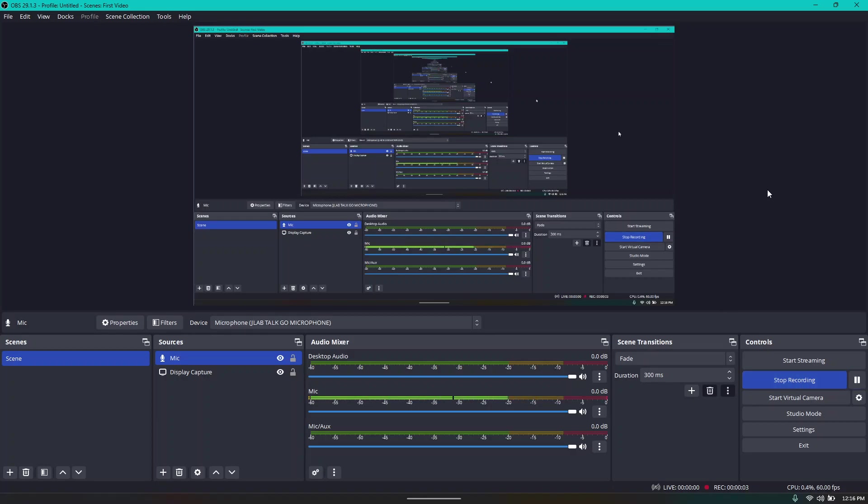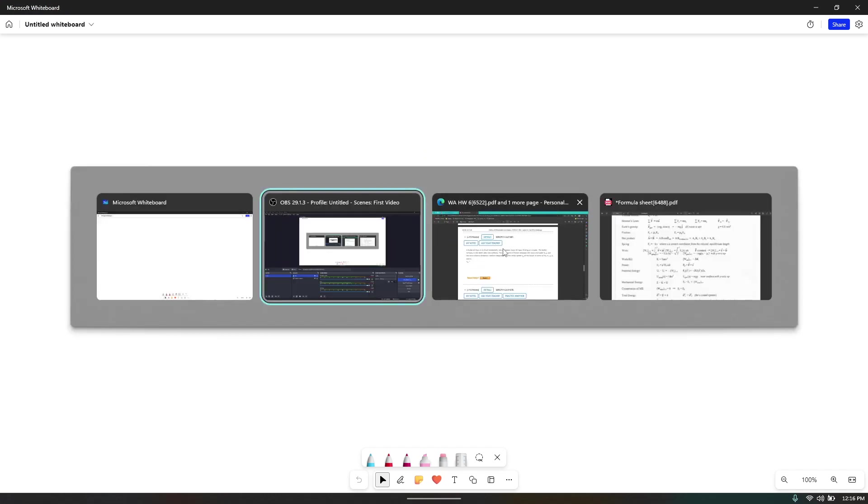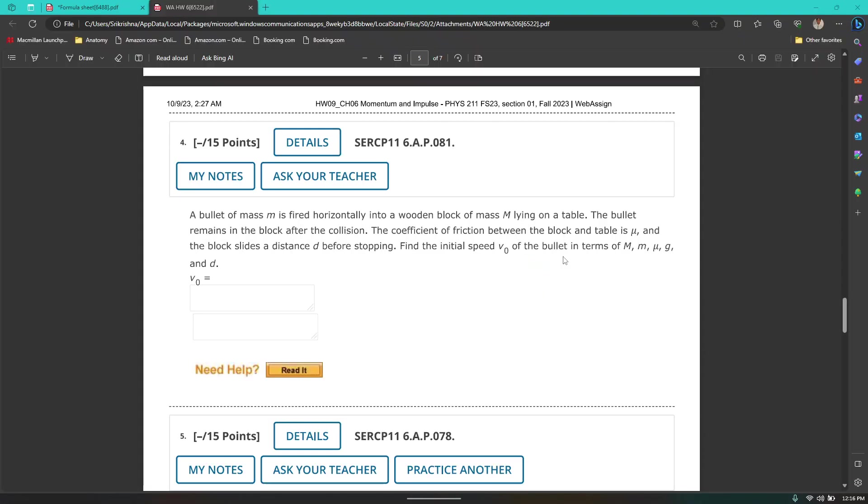Perfect. Audio works. Terribly sorry if I bottomed out or something. Okay, so this is going to be website question 4 from chapter 6. A bullet of mass M is fired horizontally into a wooden block of mass M lying on a table. The bullet remains in the block after the collision. The coefficient of friction between the block and the table is mu, and the block slides a distance D before stopping. Find the initial velocity V0 of the bullet in terms of M, big M, little m, mu, G, and D.